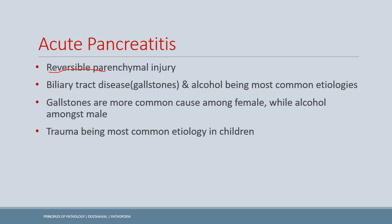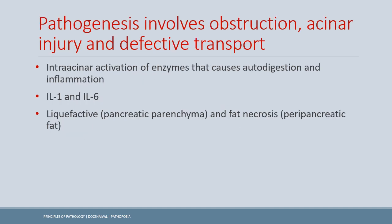Acute pancreatitis is reversible parenchymal injury — the word 'reversible' differentiates it from chronic pancreatitis, which is irreversible. The etiology includes biliary tract disease and alcohol, with alcohol being most common among males and gallstones most common among females. Trauma is more common among children — for example, a road traffic accident injury.